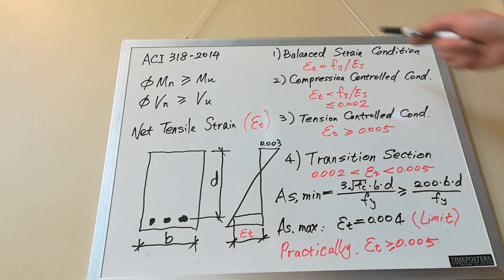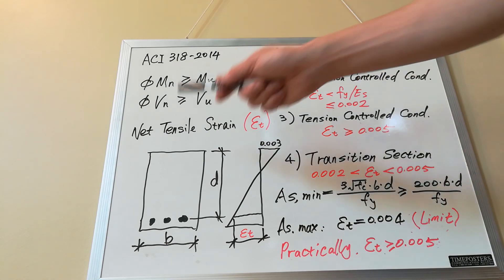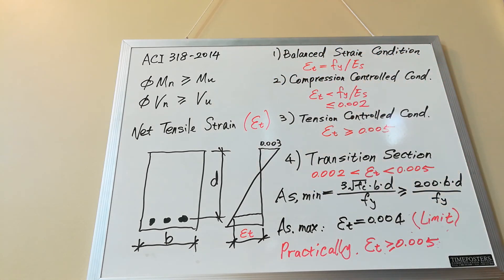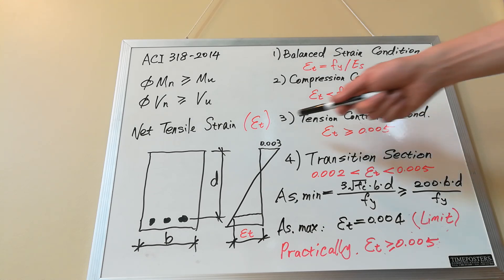The first one is balanced strain condition. This is a condition where the tension steel reaches its yielding strength when the concrete strain in the extreme compression fiber reaches its limit. That means the steel yields at the same time the concrete is compressed to its compressive limit strain of 0.003.